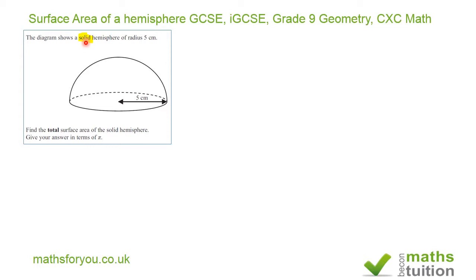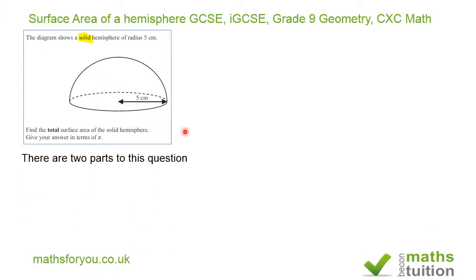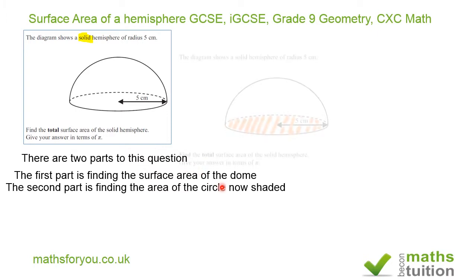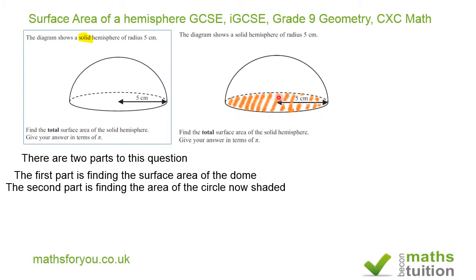When we did this in class, most students did not realise this. They only found the surface area of a hollow hemisphere itself. Now this is a solid hemisphere, and there are two parts to this question. The first part is finding the surface area of the dome — that's the hemisphere itself. And the second part is to find the surface area of this circle here, because that's also solid.